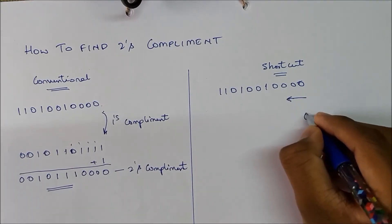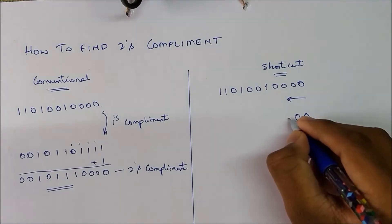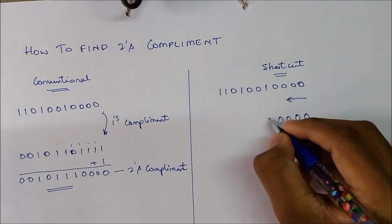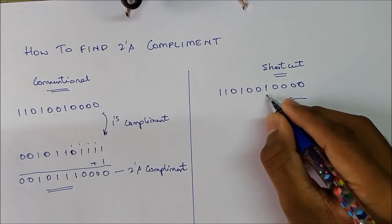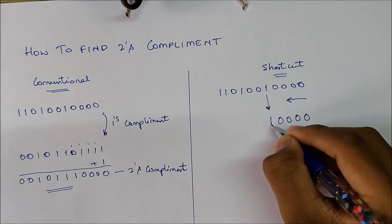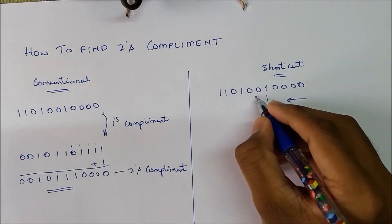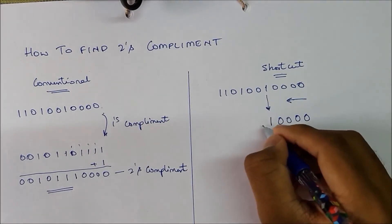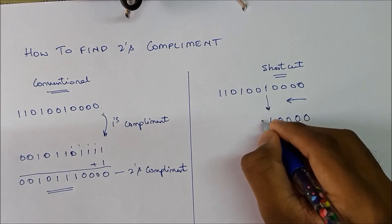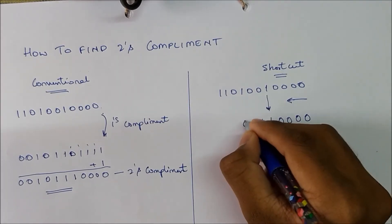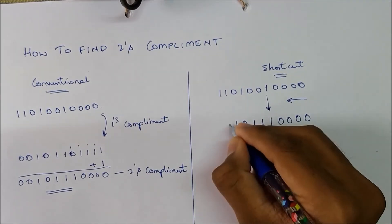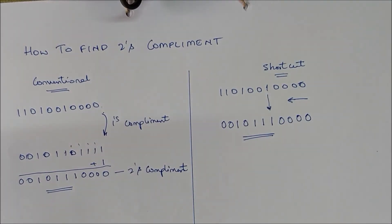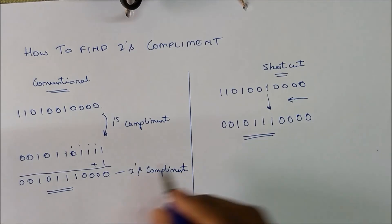Write the number as it is: 0, 0, 0, 0 — up to the first 1. Write that first 1 as it is. Then after the occurrence of the first 1, complement the other bits: 0 becomes 1, 1, 0, 1, 0, 0. That's it — this is the 2's complement of the given binary number.